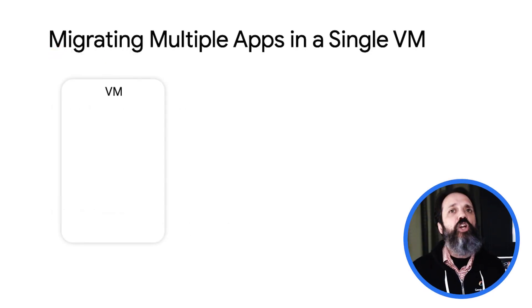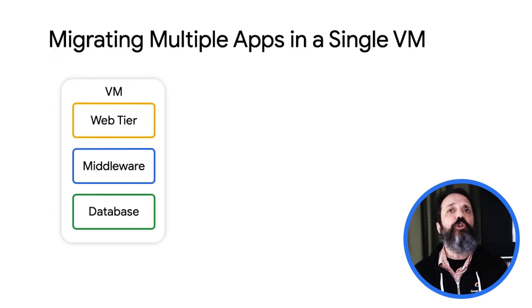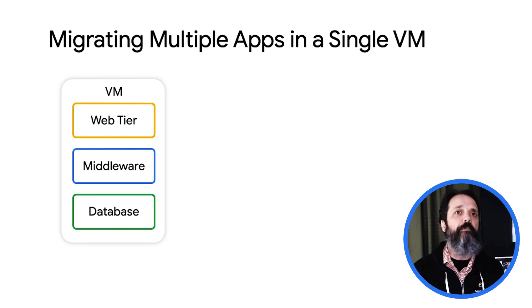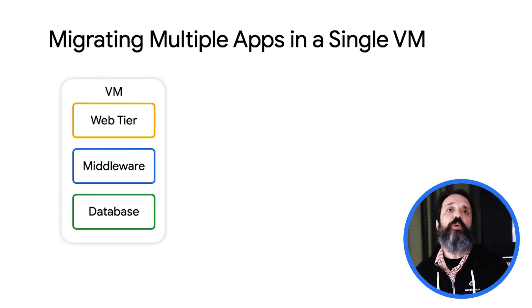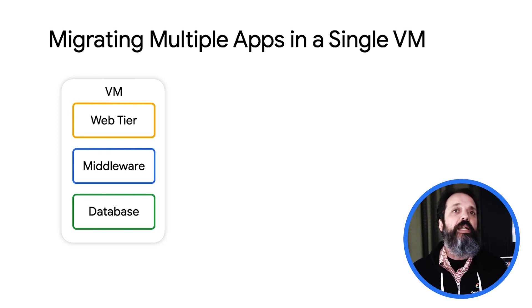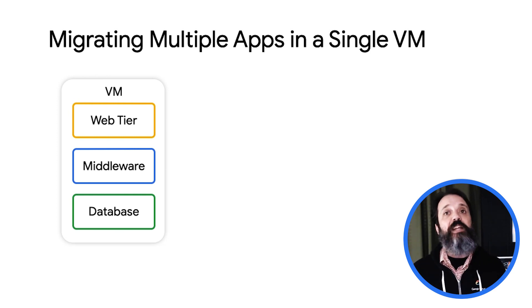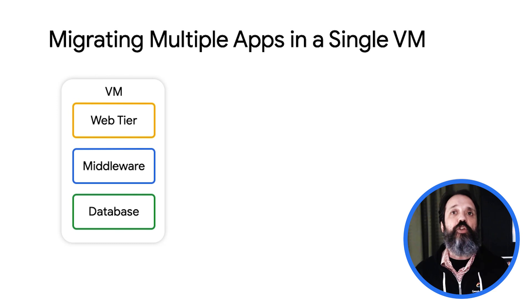Let's start by looking at handling multiple apps or services running in a single VM. A common scenario we often see is an application where multiple components are running on the same VM — for instance, perhaps you have a web front end, a middleware component, and a database all running together in a monolithic virtual machine. Now, ideally with Kubernetes, you have a single process running in each pod. However, by default, Migrate for Anthos will not create a separate container image for each service running in a VM.